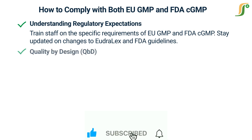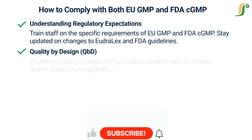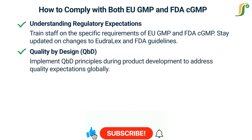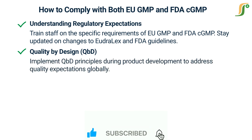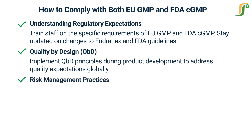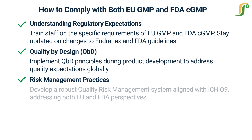Companies should implement Quality by Design (QbD) principles during product development to address quality expectations globally. Additionally, developing a robust quality risk management system aligned with ICH Q9 is essential for addressing both EU and FDA perspectives.